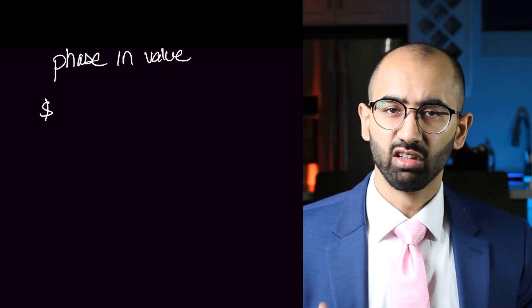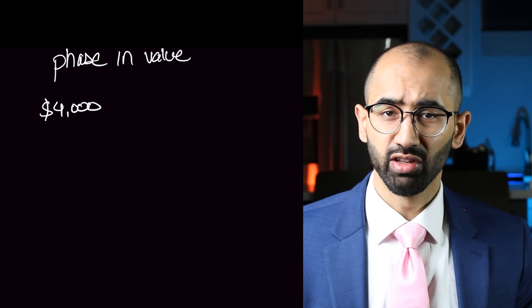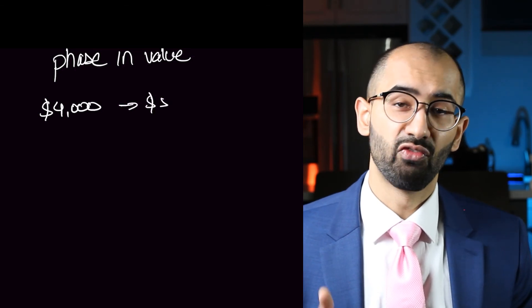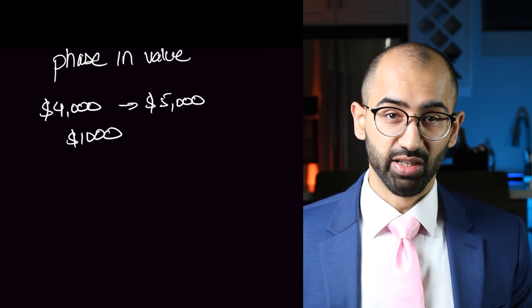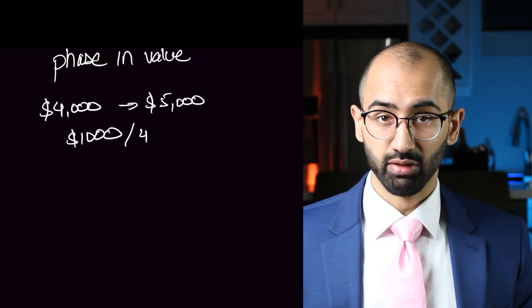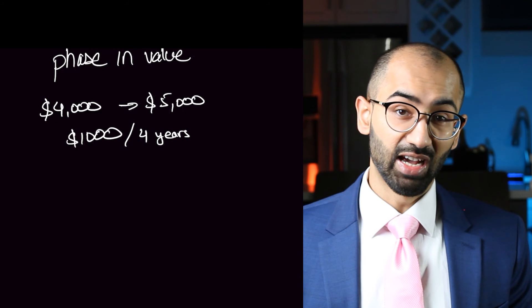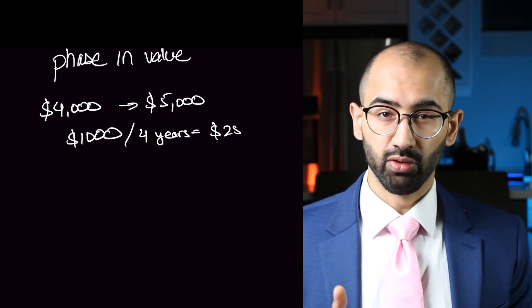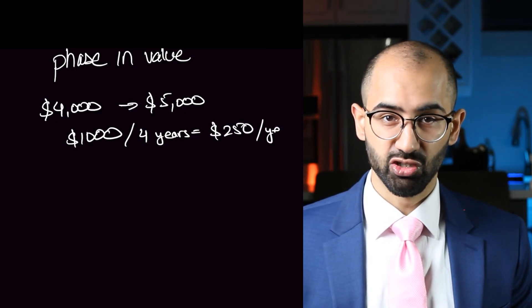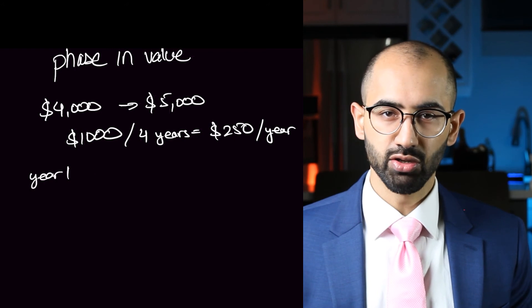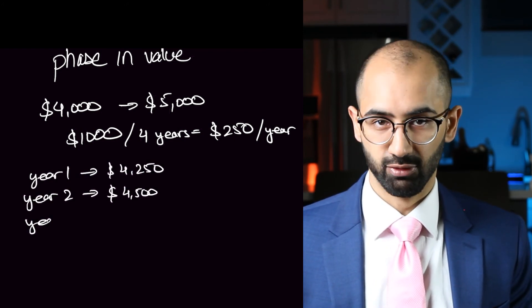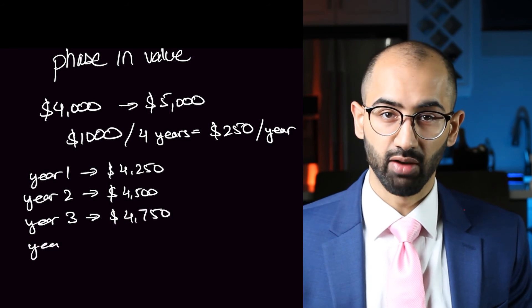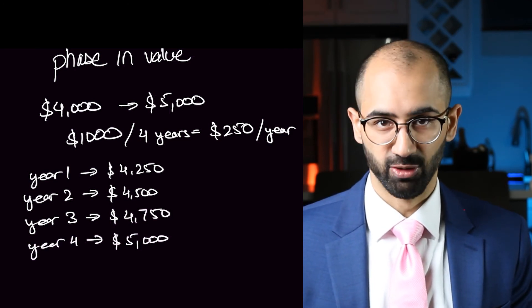The increase in your property tax is introduced gradually over the course of four years, called the phase-in value. Suppose your property tax is $4,000 and after the reassessment, the property tax is now $5,000. That's $1,000 increase in your property taxes, but you're not going to be paying that all at once. Your property tax bill is going to increase at a rate of $250 each year. That means in year one, you're only going to be paying $4,250, and it's going to go up by that amount every year until you're paying $5,000 on your fourth year.